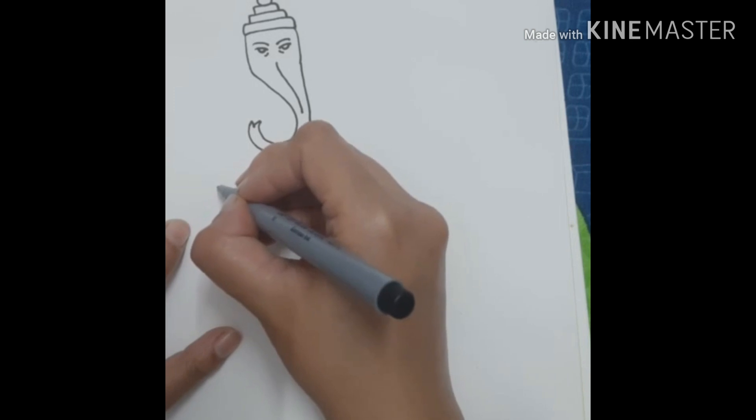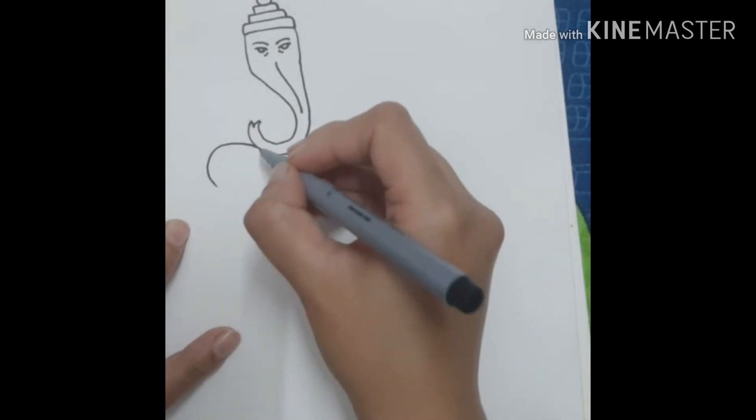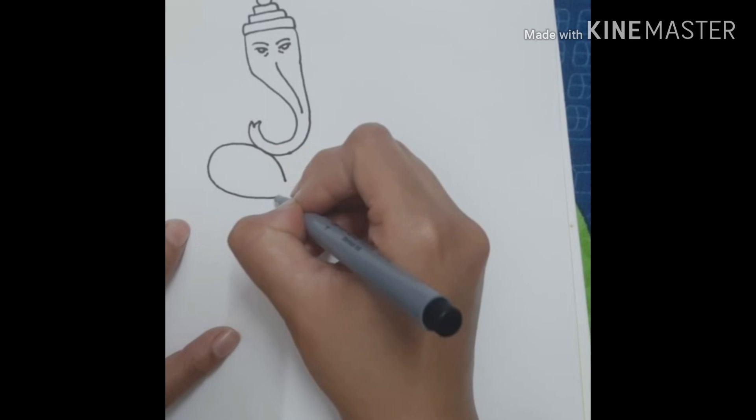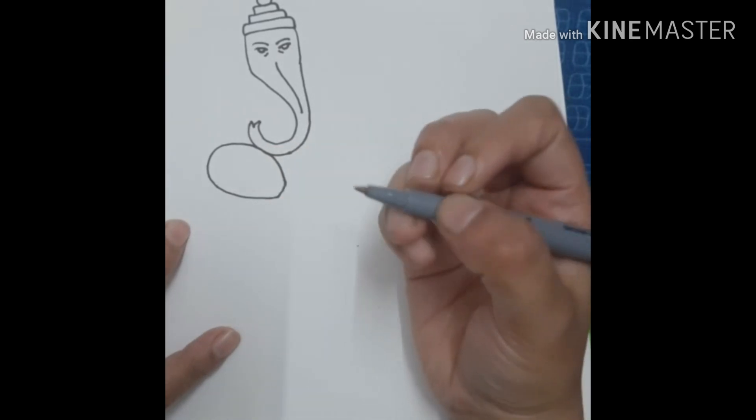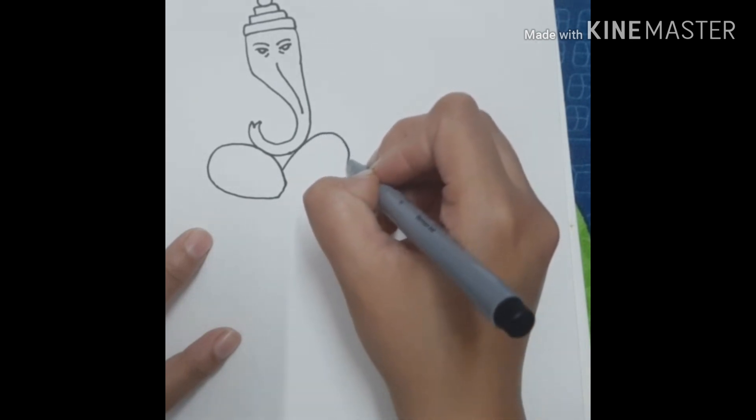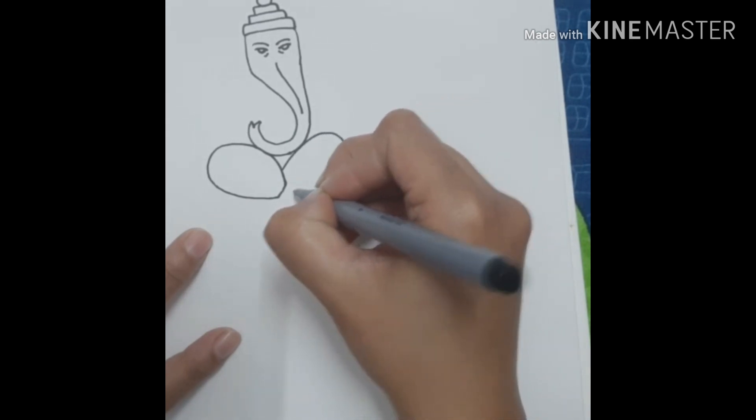We are making Ganesha's legs. Ganesha is in sitting position. You will make the legs in an oval shape. You need to position them near the trunk. For the other leg, we will make another oval. You need to touch the trunk, something like this.